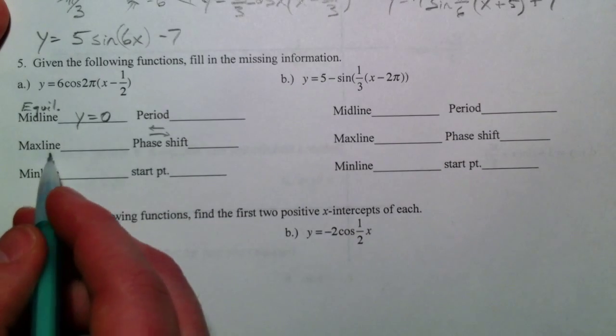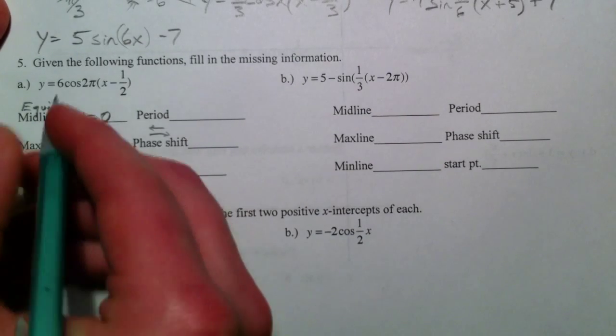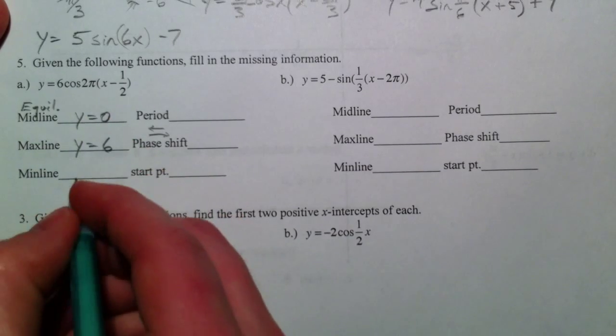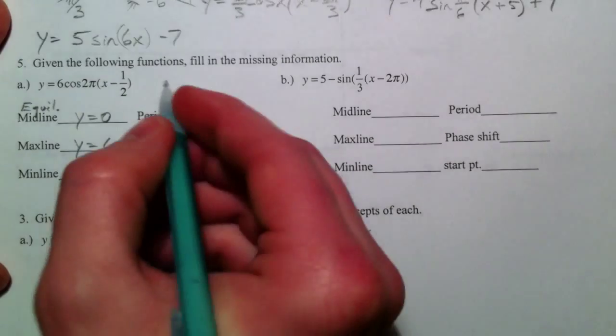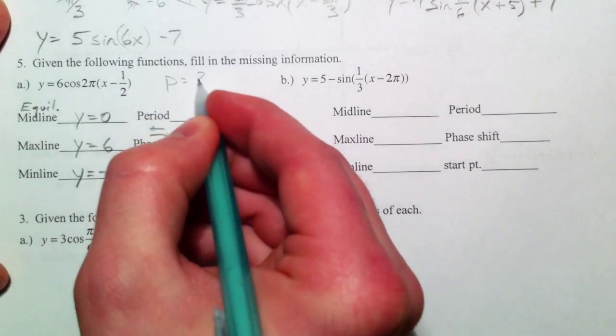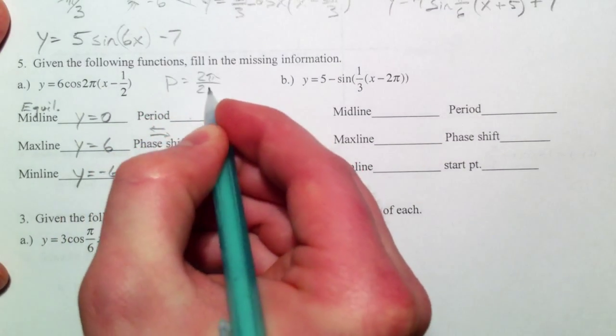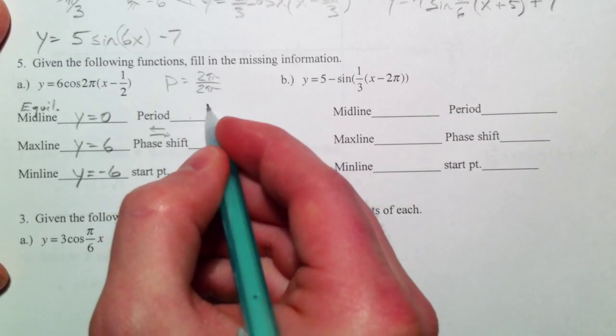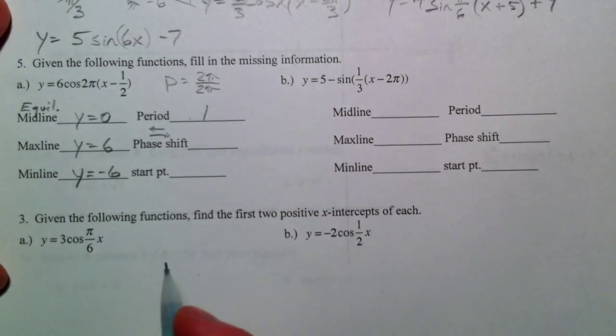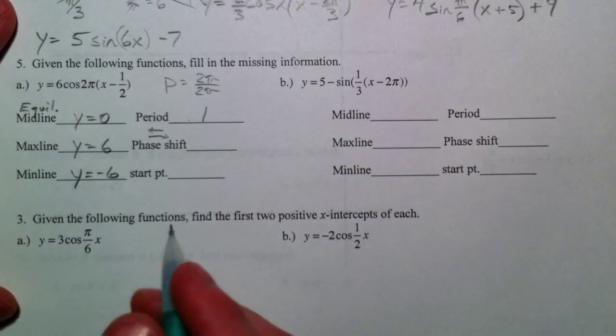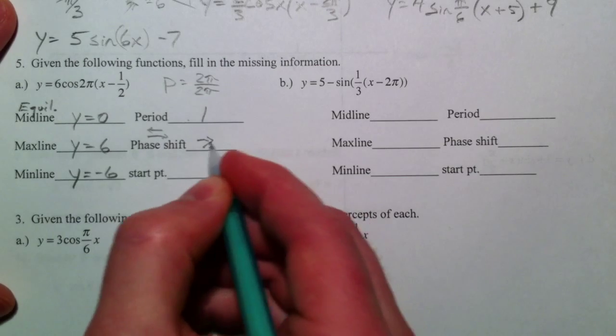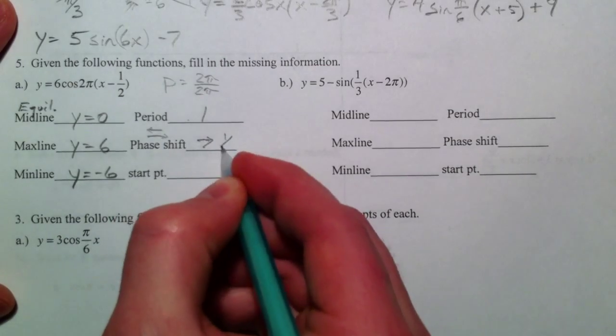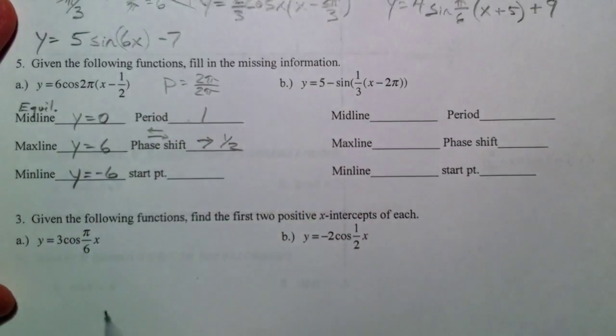The max line, the amplitude is 6. And so it goes up to 6. And it goes down to negative 6. The period, 2 pi, divided by 2 pi. And so the period is 1. And so that's what we would take and split into our little pieces. Minus 1 half makes it go to the right. 1 half, because it's opposite and it's horizontal.